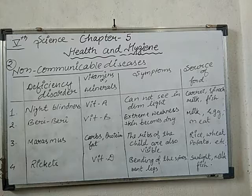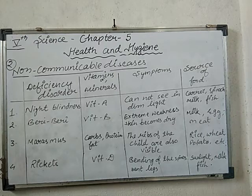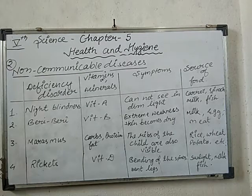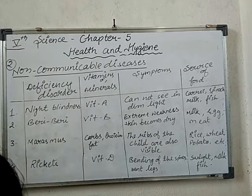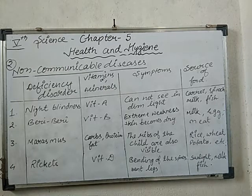Another example is Vitamin C deficiency. The disease caused by the lack of Vitamin C is scurvy. What happens in scurvy? A person suffers from swelling and bleeding of the gums. To get rid of scurvy, we need to intake Vitamin C-rich foods — all citrus foods like amla, tomatoes, lemon, and oranges.